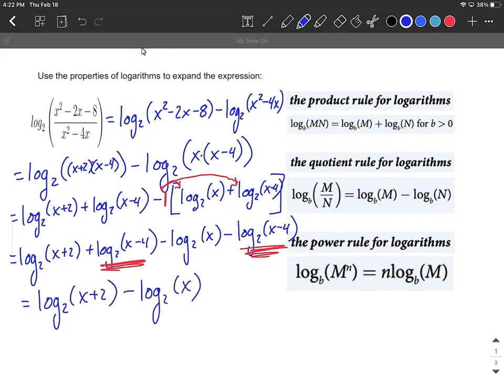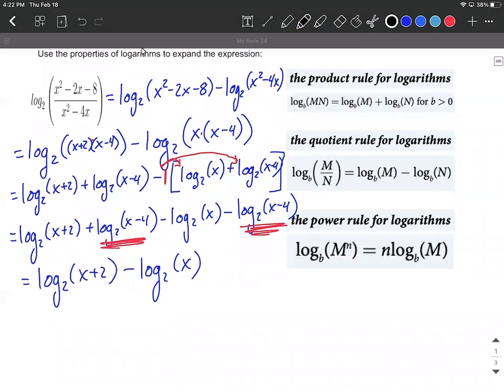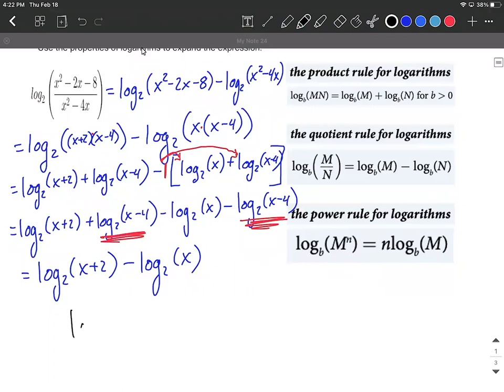Now this isn't the only way you could go about this. If from the very beginning, what you did was you said, I am going to start out and factor as much as I can, like start from the very beginning original problem. You can factor the numerator just like we did x plus 2, x minus 4, and then the denominator has that common factor of x. So after you factor that out, you get your x times x minus 4.